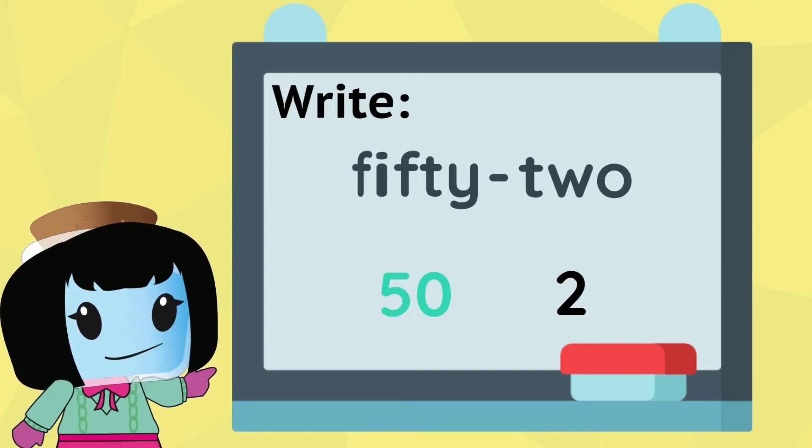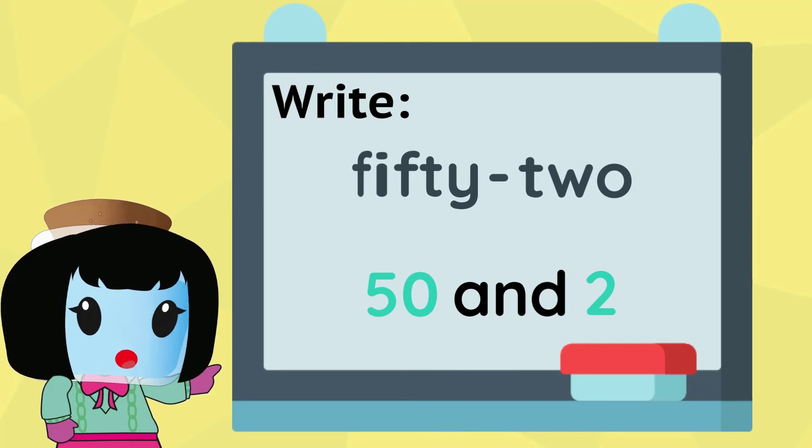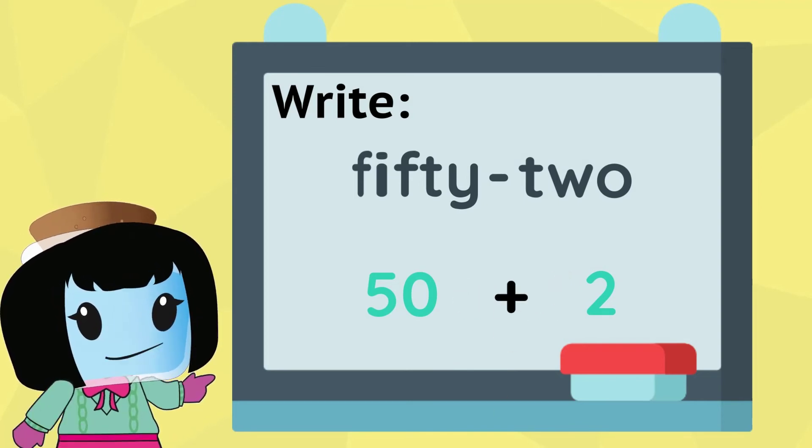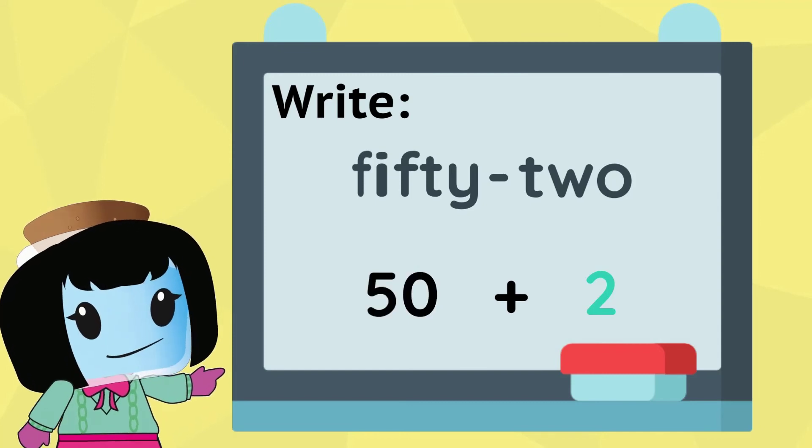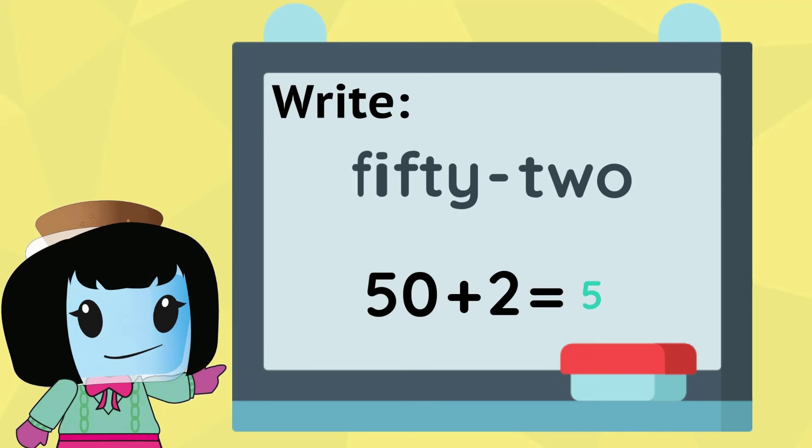Now we have fifty and two. To write it as one number, we would add the fifty and the two together. So fifty plus two would create the number fifty-two.